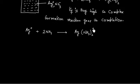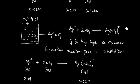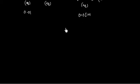Initially we have 0.01 M of Ag⁺. Since the complex formation goes to completion, all of the Ag⁺ will react with ammonia and form 0.01 M of the complex Ag(NH₃)₂⁺. Once this complex is formed, it has a tendency to dissociate, so now we consider the dissociation of the complex.